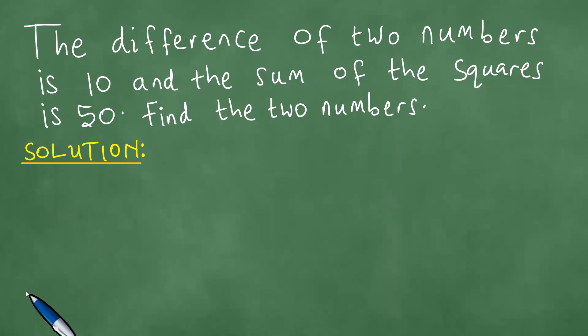We take a look at this question and we realize that we need to solve this word problem. The difference of two numbers is 10 and the sum of the squares is 50. Find the numbers.